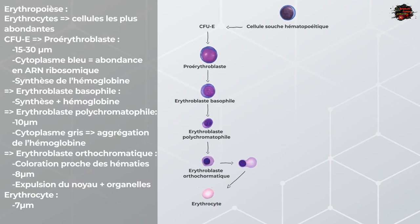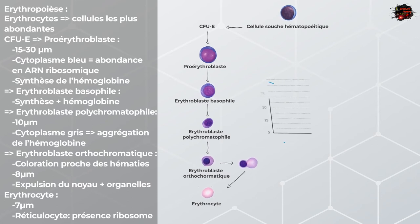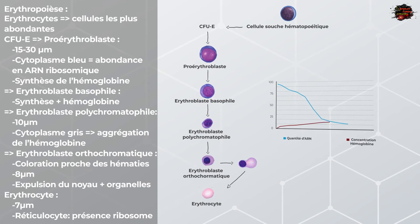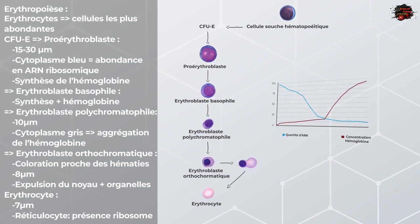Entre 1 et 2% du total des érythrocytes produits contiendra toujours des ribosomes, ce qui va résulter en un pH légèrement basique. On appellera ces cellules les réticulocytes. En rejoignant la circulation sanguine, ils termineront leur maturation. Il est important de noter qu'au long de l'érythropoïèse, l'hémoglobine augmente graduellement alors que les ARN, le cytoplasme et la taille de la cellule décroissent à chaque étape.